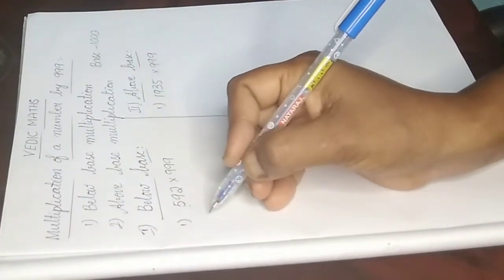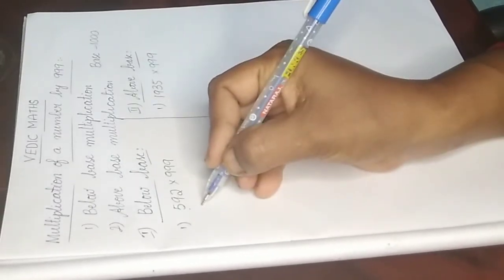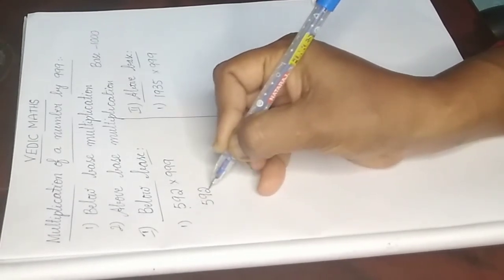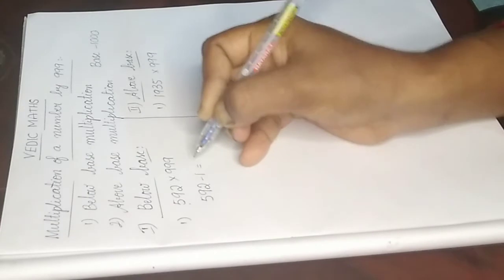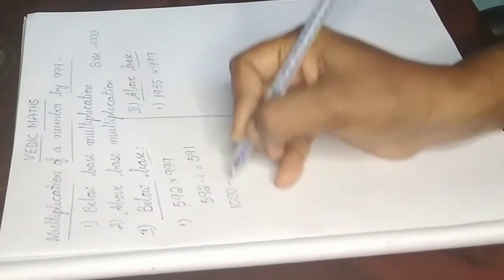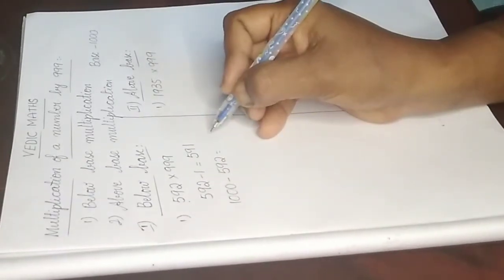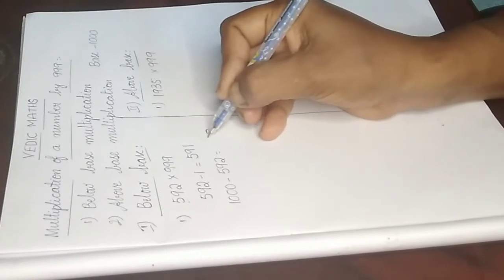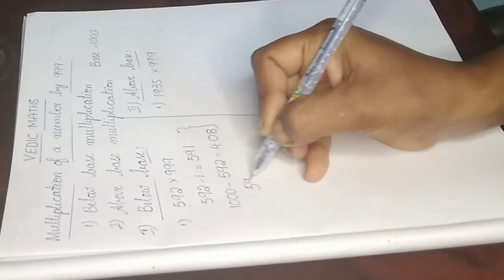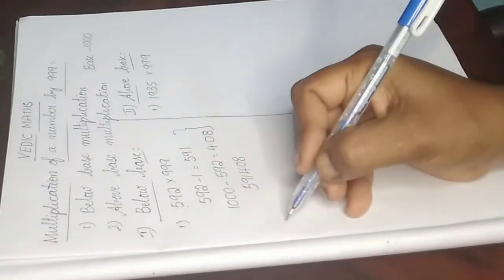Now how to write the answer? First, write the number before 592 — that means subtract 1 — which gives 591. Then calculate 1000 minus 592, which is 408. Now combine these two: 591 and 408. So 591408 is the answer.